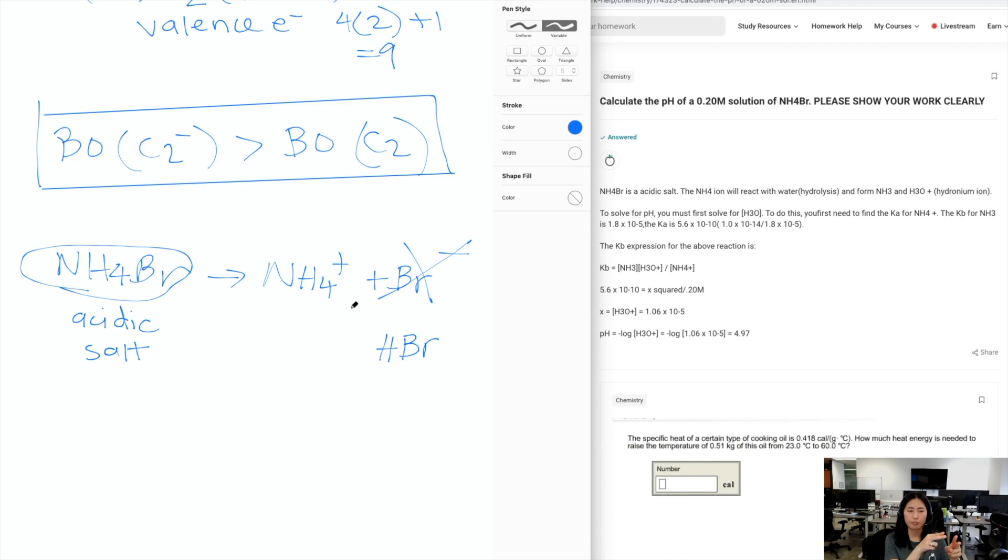So first of all, there's two important points that you have to remember. So if your anion is part of one of your strong acids, so let's say if you have Cl-, and it gets paired with H, which is hydrochloric acid, HCl, if it forms a strong acid, that means this anion will not undergo hydrolysis.